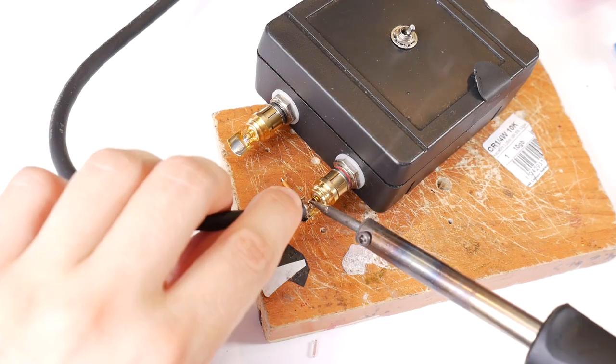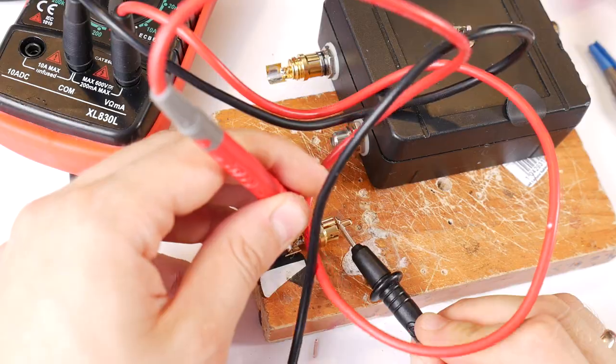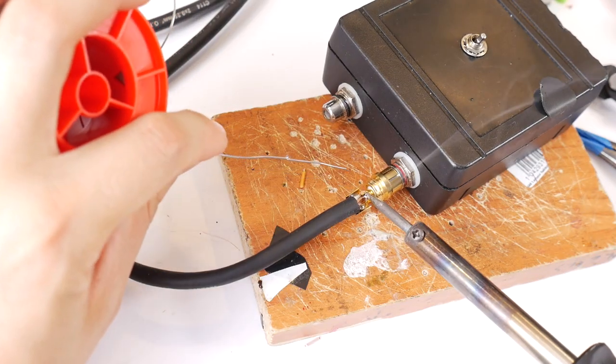Solder the ground wire and then the center wire. Check with a multimeter that no short circuit has formed. Then solder the other RCA connector in the same way.